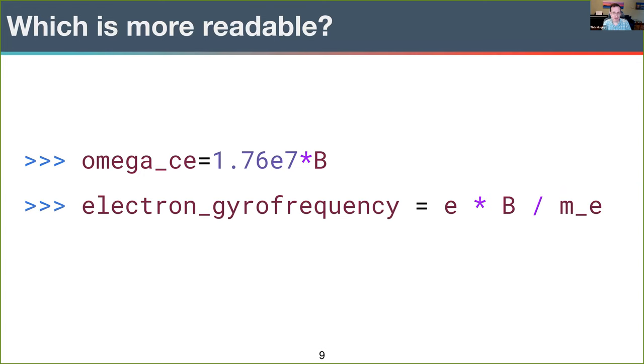So let's start by comparing two lines of code. My examples are going to be in Python because it was either that or Fortran. The first line says omega CE equals 1.76e7 times B. The second line says electron gyrofrequency equals e times B over m_e. The first line uses a symbol for the electron gyrofrequency, a symbol that is probably only familiar to you if you're a plasma physicist. And if we want to learn what omega CE means, a web search isn't going to help, and it's not clear where the numerical coefficient comes from either. The second line spells out the term for the variable, which is great if you want to do a web search. The right-hand side uses standard symbols from physics for the fundamental charge, magnetic field, and electron mass. The second line ends up being twice as long as the first line, but it's quite a bit more readable, in part because of the power of names.